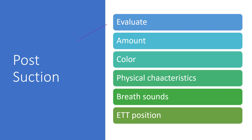Once suctioning is done, evaluate: do I need to suction again? How much was obtained — small, moderate, or large amount? What are the characteristics — cloudy white, blood-tinged, pink frothy, tenacious, or purulent secretions? After the procedure, confirm the ET tube is still in good position, because it can move — especially in neonates and pediatrics. Listen to breath sounds: did they improve, or did you cause bronchospasm and make things worse?